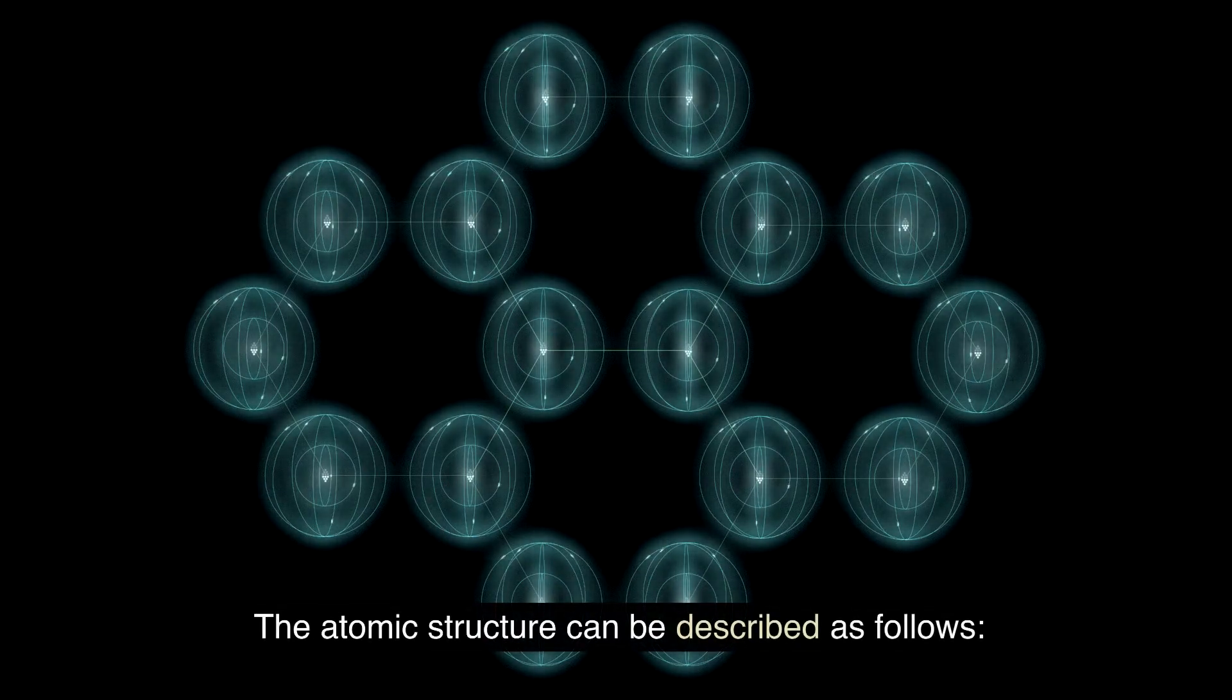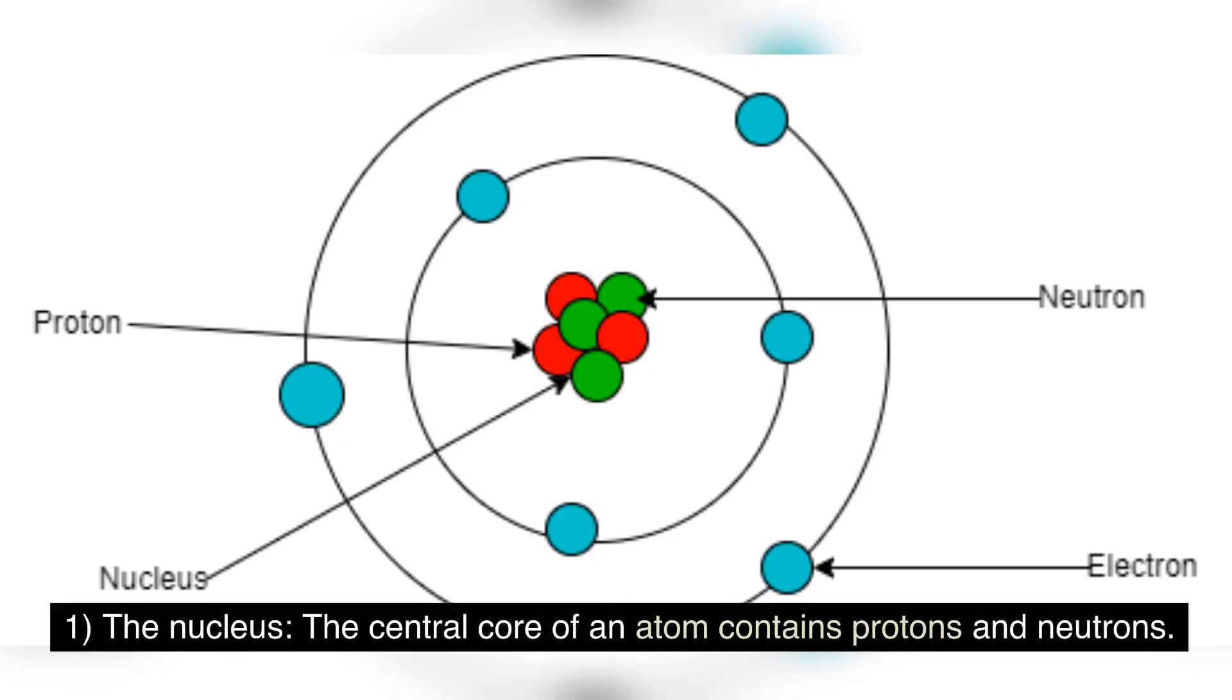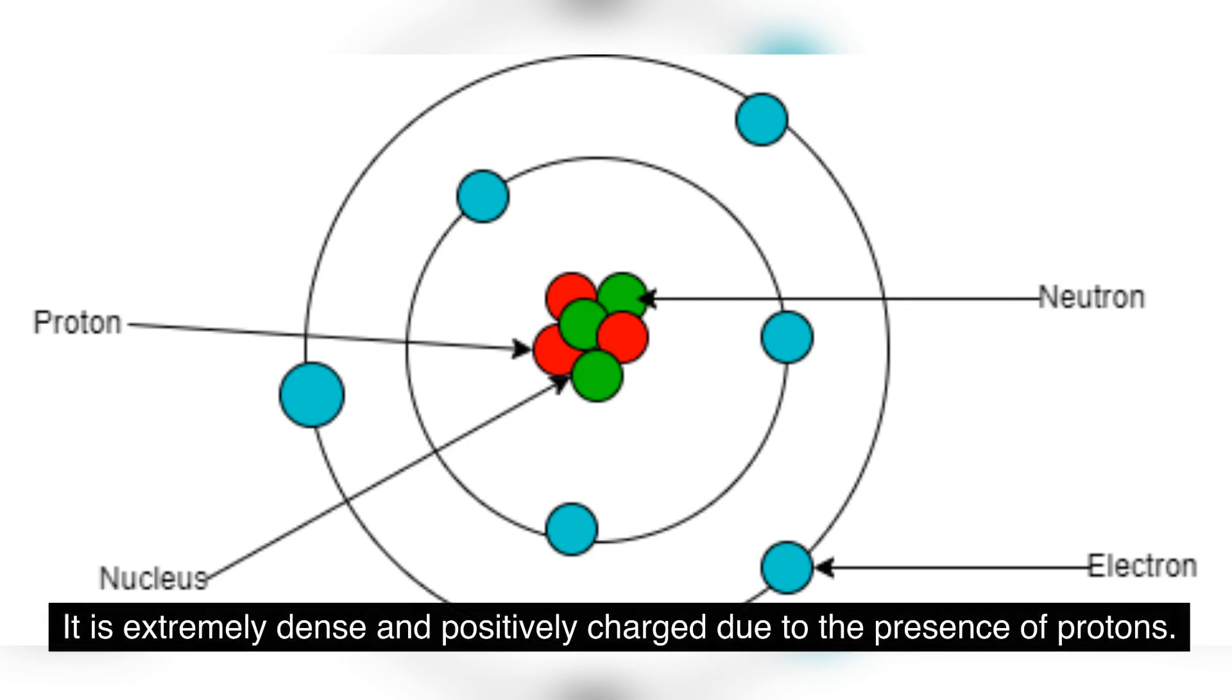The atomic structure can be described as follows. The nucleus: the central core of an atom contains protons and neutrons. It is extremely dense and positively charged due to the presence of protons.